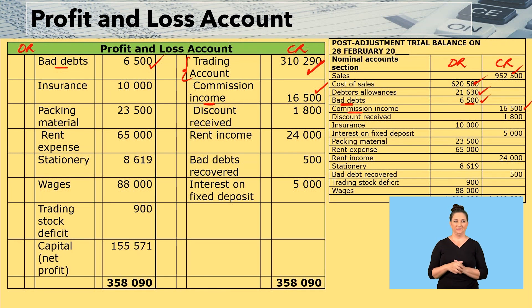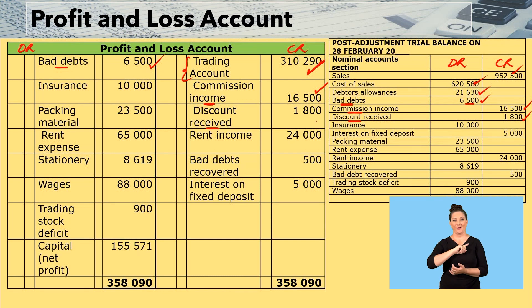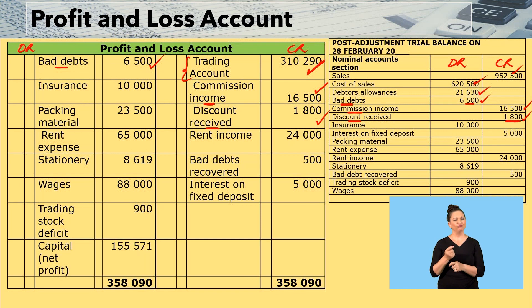The next amount is discount received — $1,800. You come to the credit side and say discount received $1,800. You have to understand that discount received is considered income, hence you see it on the credit side of your trial balance. So it comes to the credit side of the profit and loss account, treated the same way as commission income.